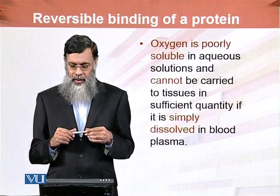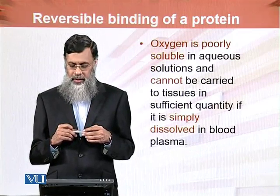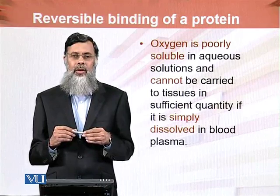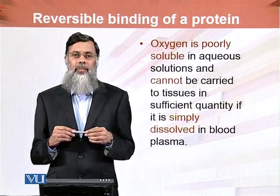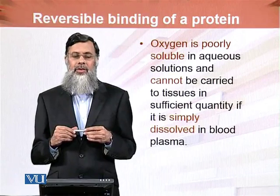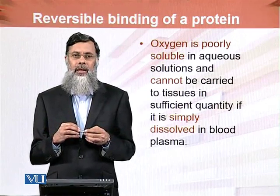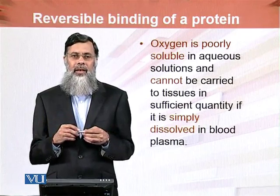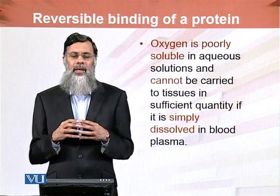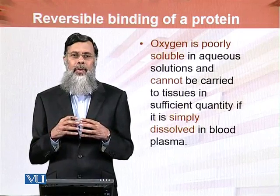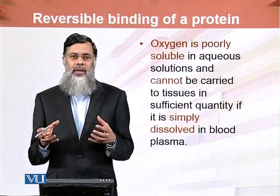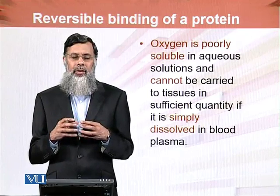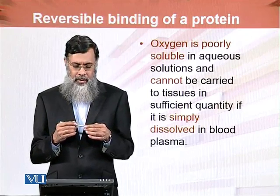Oxygen is poorly soluble in aqueous solution and cannot be carried to tissues in sufficient quantity if it is simply dissolved in blood plasma. Oxygen is not properly soluble in plasma or aqueous solution, so if we put oxygen directly into plasma it will not be carried. There must be a mechanism that binds oxygen to a particular protein. Oxygen is a ligand which is reversibly bound to hemoglobin — this is a classical example of reversible binding of proteins.